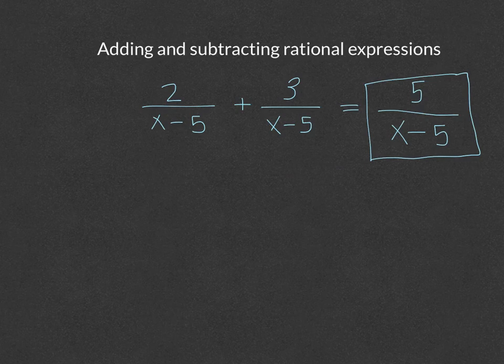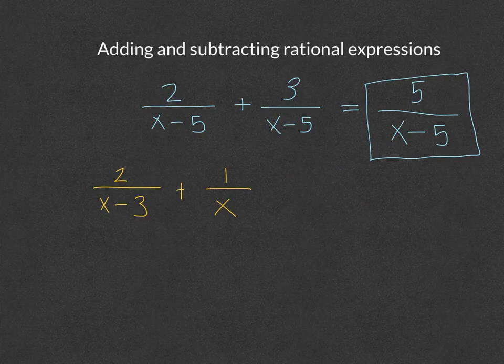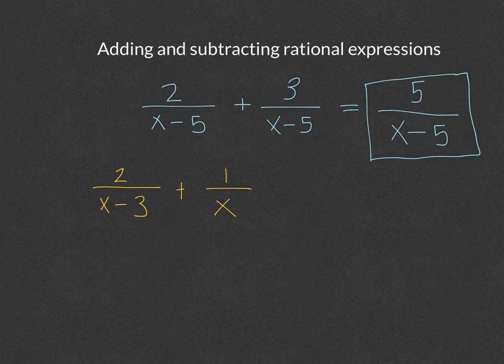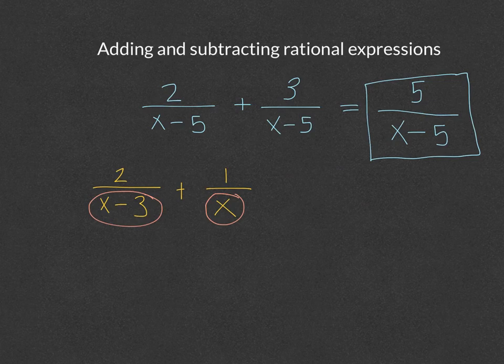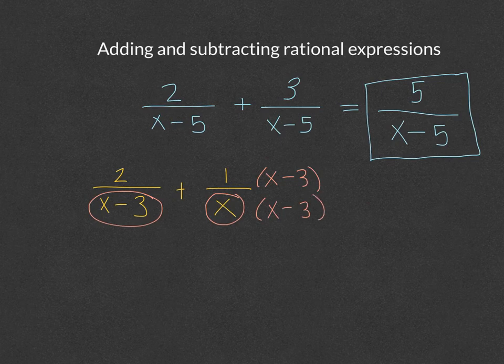Let's take a look at one where they do not have the same denominators. Here I have 2 over x minus 3 plus 1 over x. They do not have the same denominator, so finding the least common multiple is really the trickiest part. What you want to do is find the factors. The denominator here has x and the denominator here is x minus 3. I need to balance the denominators out — because I only have an x here, this fraction needs an x minus 3 to balance. You balance with whole factors, not with terms.